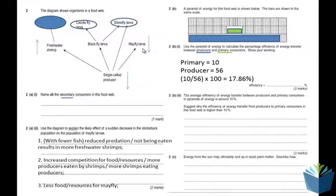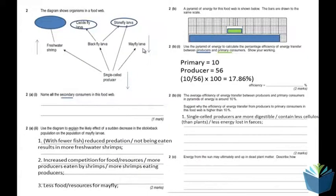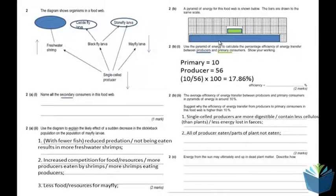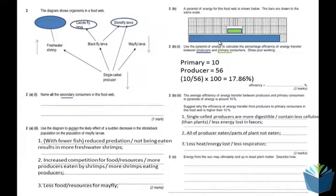The second part of 2b: the average efficiency of energy transfer between producers and primary consumers is around 10%. Explain why the efficiency in this food web is higher than 10%. The single-cell producers are more digestible, so they lose less energy in faeces. More of the producer gets consumed and isn't passed out as faeces or excreted. Also, most of the producer is eaten with no wastage, and there is less energy loss through respiration. Any of those points gains a mark.